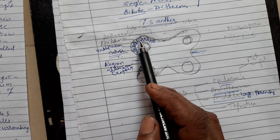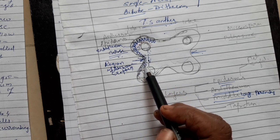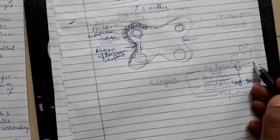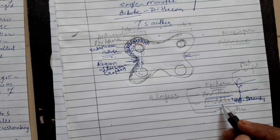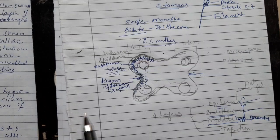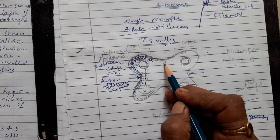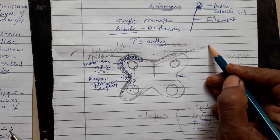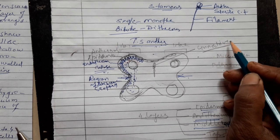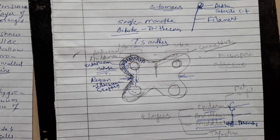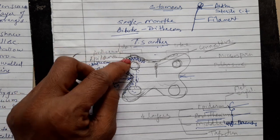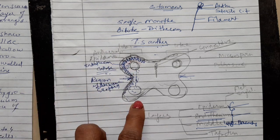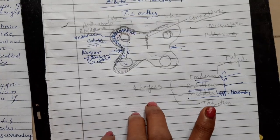So the first three layers — epidermis, endothecium, and the parenchymatous middle layer — all help in the dehiscence of the anther. There is also a connective tissue portion present here which is sterile and does not take part in reproduction. Now we are going to see the most important fourth layer, which is the tapetum.